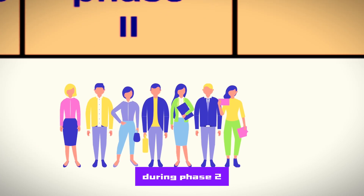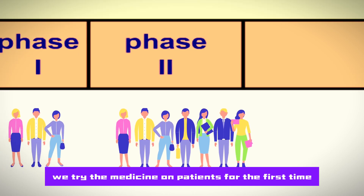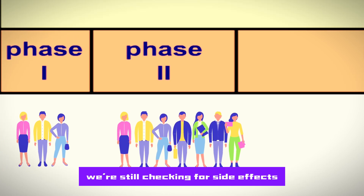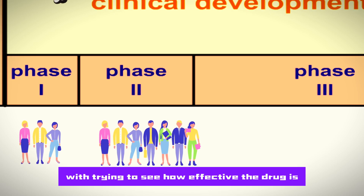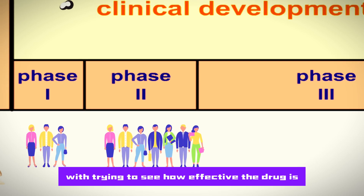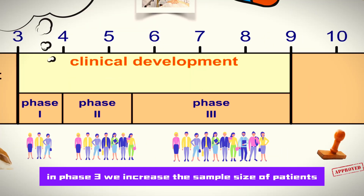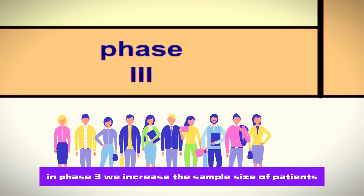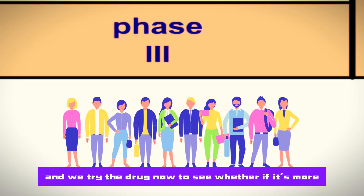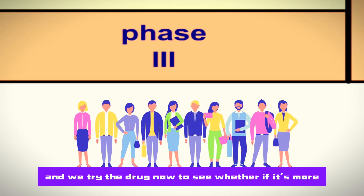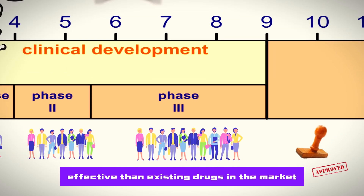We then move to phase two. During phase two, we try the medicine on patients for the first time. We're still checking for side effects, and in addition, we're trying to see how effective the drug is. In phase three, we increase the sample size of patients and we try the drug to see whether it's more effective than existing drugs in the market.